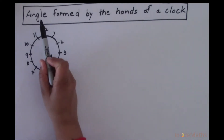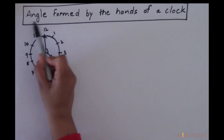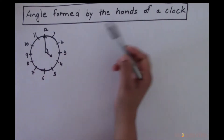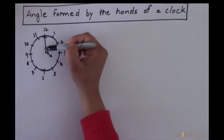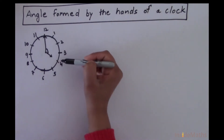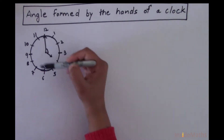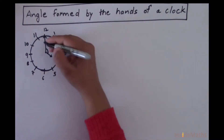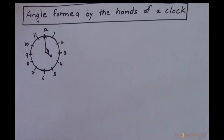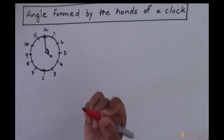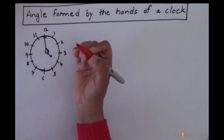In this video we'll see how to find an angle formed by the hands of a clock. On this clock we have to find this angle, so before we find this angle, first of all we'll see how the clock is structured.